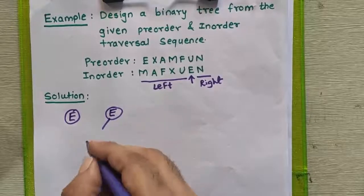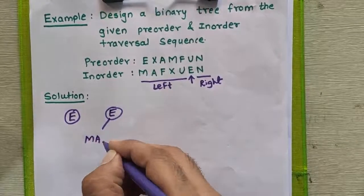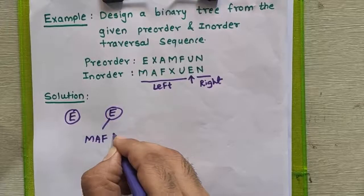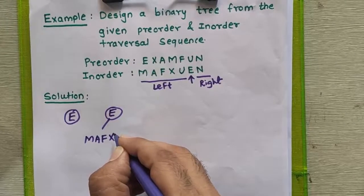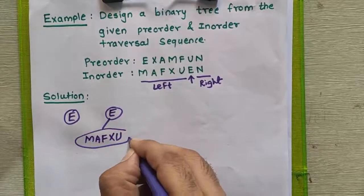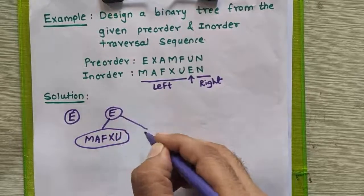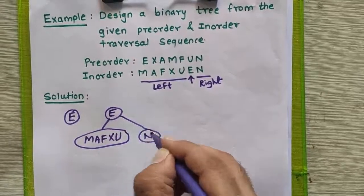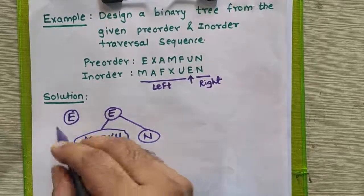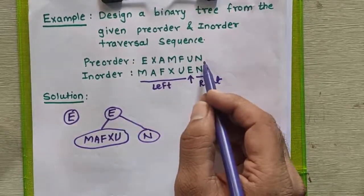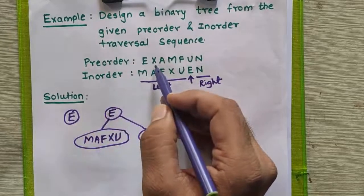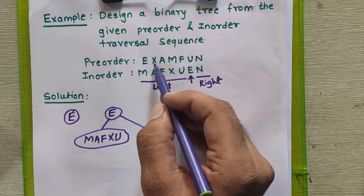In the left subtree we have M, A, F, X, and U, whereas on the right side we have node N. We repeatedly follow these steps until the last element is considered. We go to pre-order again to find the next root — after node E, the next root is X.